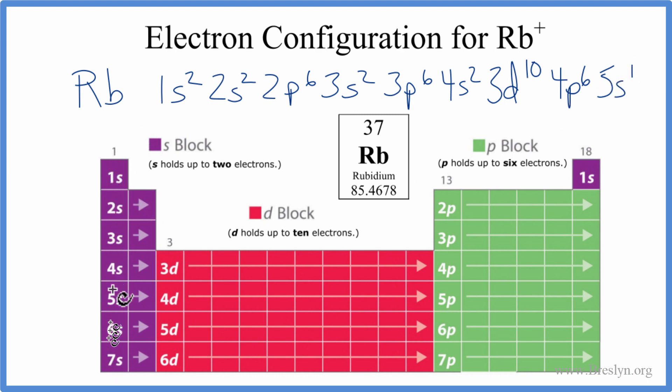To get rubidium plus, that means we've lost a valence electron. So when you lose an electron, electrons are negative, you lose that negative charge, you become positive. So Rb+ is just rubidium that's lost this one electron right here. So now we have the plus here, and this is the electronic configuration for Rb+.